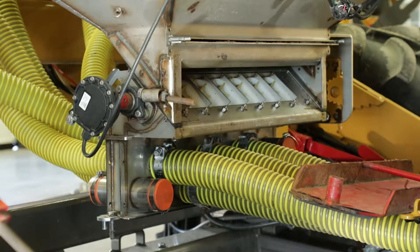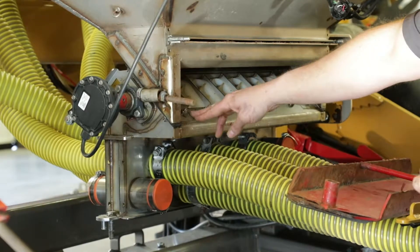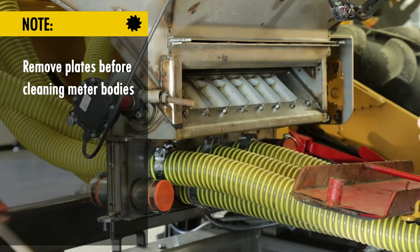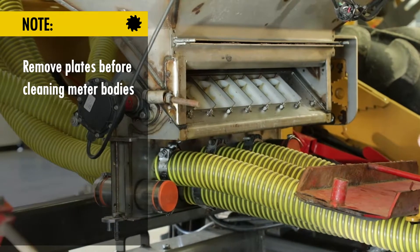Some models are going to have block off plates as you'll see here. In that case you will want to remove block off plates before pressure washing the meter bodies.